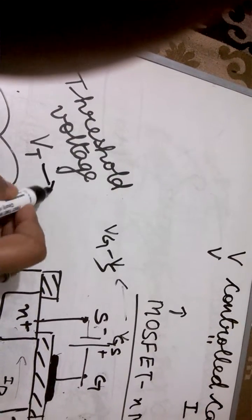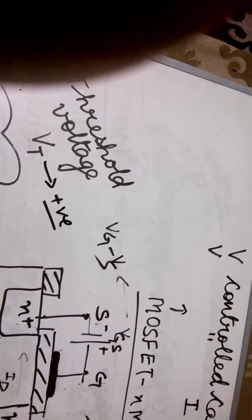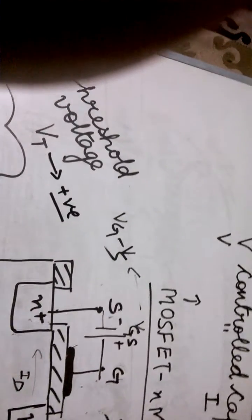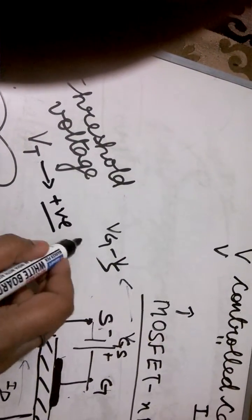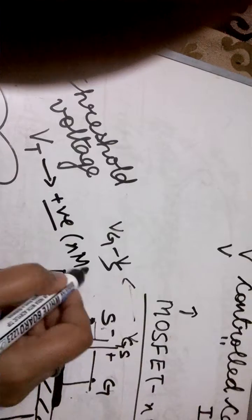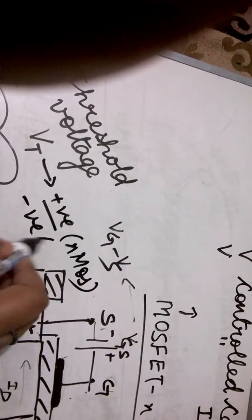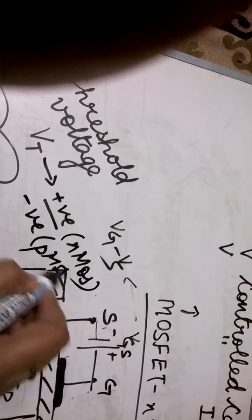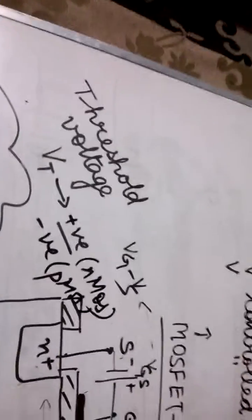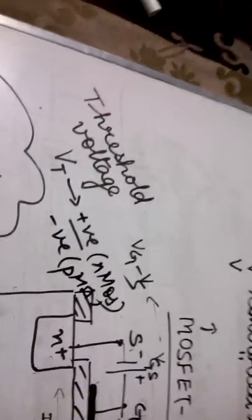For NMOS the value of VT will always be positive and for PMOS device the value will always be negative. So it's positive for NMOS and negative for PMOS. So you must remember the threshold voltage, it's really important as far as gate is concerned.